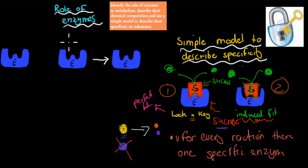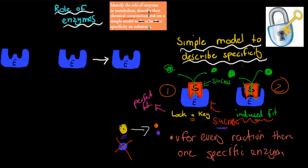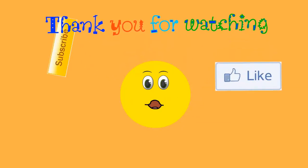To quickly go over everything: identify the role of enzymes in metabolism — they speed up chemical reactions and are biological catalysts. Describe the chemical composition — they are proteins made up of amino acids which form long polypeptide chains. Use a simple model to describe their specificity on substrates — we have the induced-fit and lock-and-key models, and each type of enzyme only works on one type of substrate. Thank you for watching.